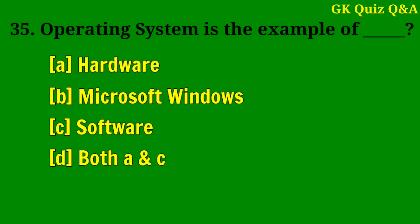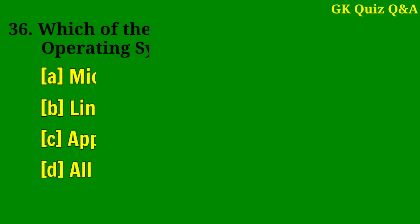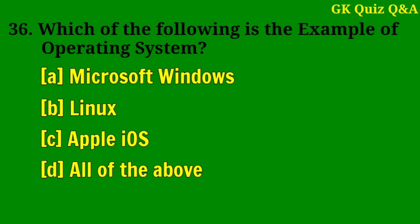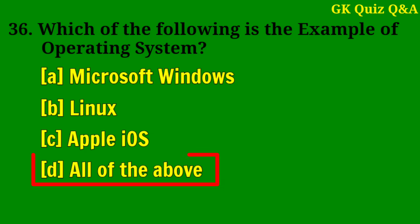Operating system is the example of? Answer C: Software. Which of the following is the example of an operating system? Answer D: All of the above.